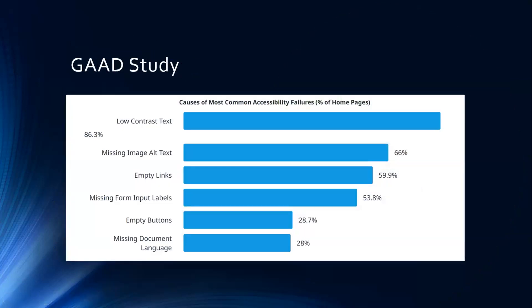Today we're going to talk about color contrast — is this really such a big deal that we need a session about it? We think so, and so does a study done by the Global Accessibility Awareness Day group. They surveyed homepages and found that out of six common accessibility failures, the number one failure was low color contrast for text against background. Over 86% of the homepages they looked at failed to pass the color contrast minimum standard. That's why we decided to do today's session — to talk about what the standards and criteria are, and tools to make sure we're meeting them.